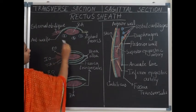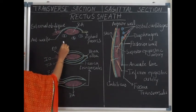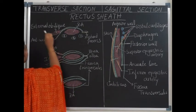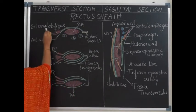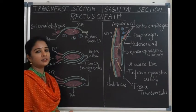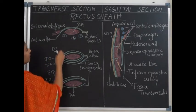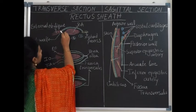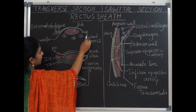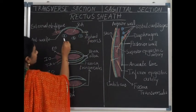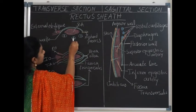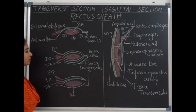Regarding the anterior wall: above the level of the costal margins, it is formed only by the external oblique muscle, which runs in front of the rectus abdominis and inserts into the xiphoid process. Posteriorly in this region, the rectus abdominis muscle rests directly on the 5th, 6th, and 7th costal cartilages.